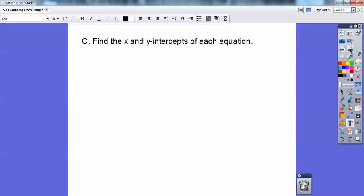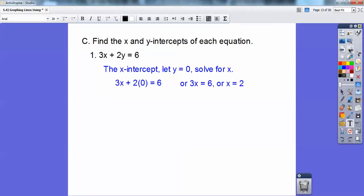So find the x and y-intercepts of each equation. Here we go. 3x plus 2y equals 6. So the x-intercept is when y equals 0. Go ahead and let y be 0, and just solve for x. So I just plugged in 0 right there next to the 2. So it's 2 times 0. And 2 times 0 goes away. You just have 3x equals 6, and then divide by 3. You get x equals 2.